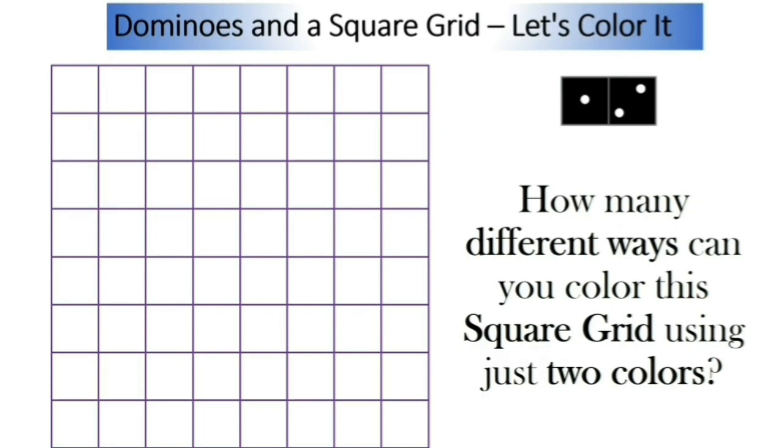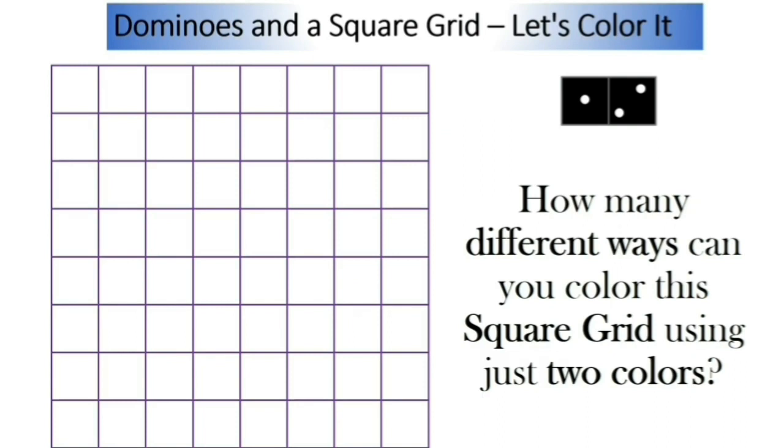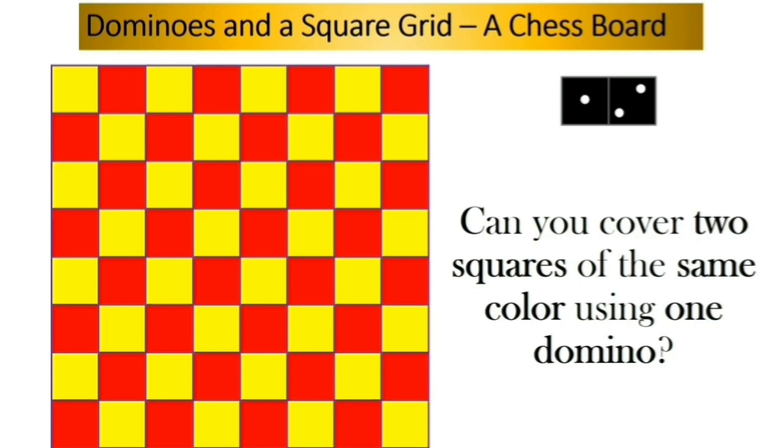Let's get back to the initial problem. We have a square grid, an 8 x 8 square grid. The question is, how many different ways we can color this square grid using just two colors? One option is to color the first row with red, the second row with yellow, the third row with red, the fourth row with yellow, and so on. But is there any other way to color? Yes, let's see. Wow, this looks like a chessboard. We have colored the diagonals alternatively with yellow and red.